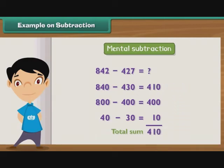But we subtracted an additional 3 when we subtracted 430 instead of 427, so we add 3 to the difference. We left out 2 when we subtracted 430 from 840 and not 842, so we add 2 more to the difference. Thus, the result of subtracting 427 from 842 is 415.